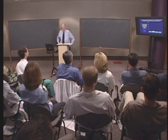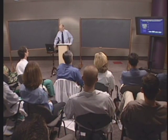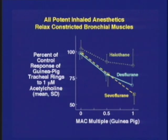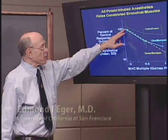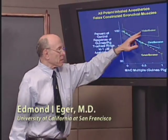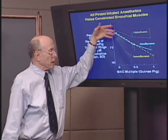Here is the illustration of the effect on bronchomotor tone. This shows the percent of the control response of guinea pig tracheal rings to micromolar acetylcholine. You give acetylcholine to a guinea pig tracheal ring and it constricts — we give that a value of 100%. Then you add halothane, desflurane, or sevoflurane, and the ring dilates despite the continued presence of the acetylcholine, which would tend to cause constriction.